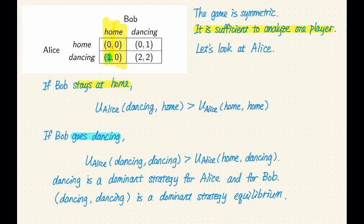So if Alice goes dancing, her utility would be one, as given by the matrix here. If Alice stays at home, her utility will be zero. So one is bigger than zero. Therefore, Alice prefers going dancing than staying at home.